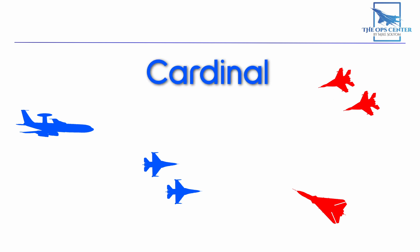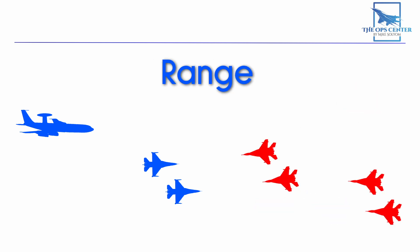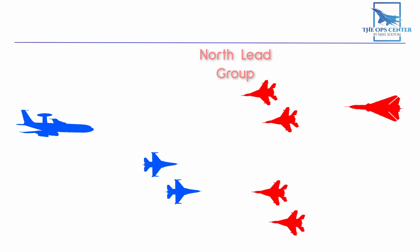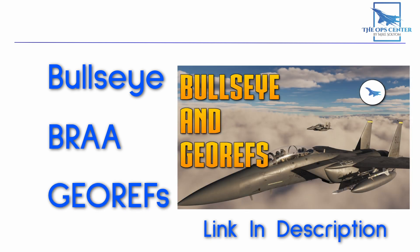When you have multiple groups, there are a few ways to tell them apart. You can specify a cardinal relationship — for example, north group and south group. Range relationship is another method: the group closer to the CAP is lead group, while the one behind is trail group, though this only makes sense from the perspective of a specific aircraft. Range and cardinal direction can also be combined, so north lead group would indicate a specific group. Additionally, a unique position like bullseye, BRA format, or geographic references can be used.